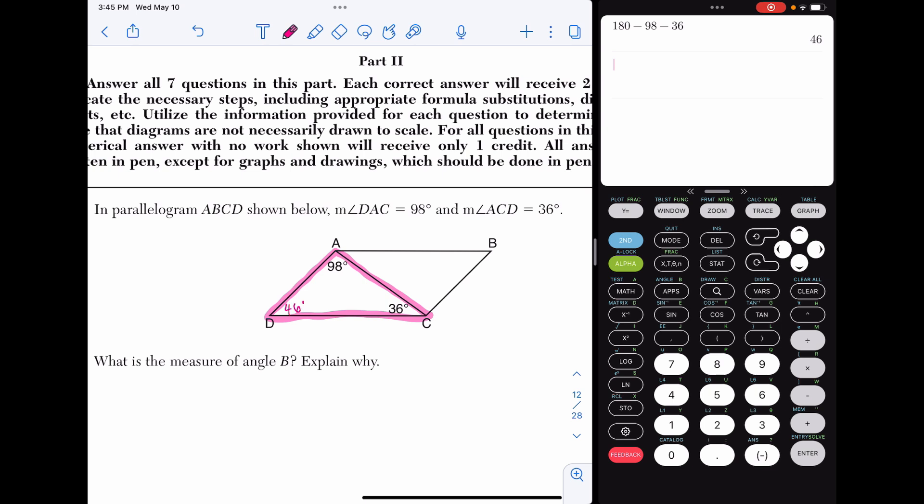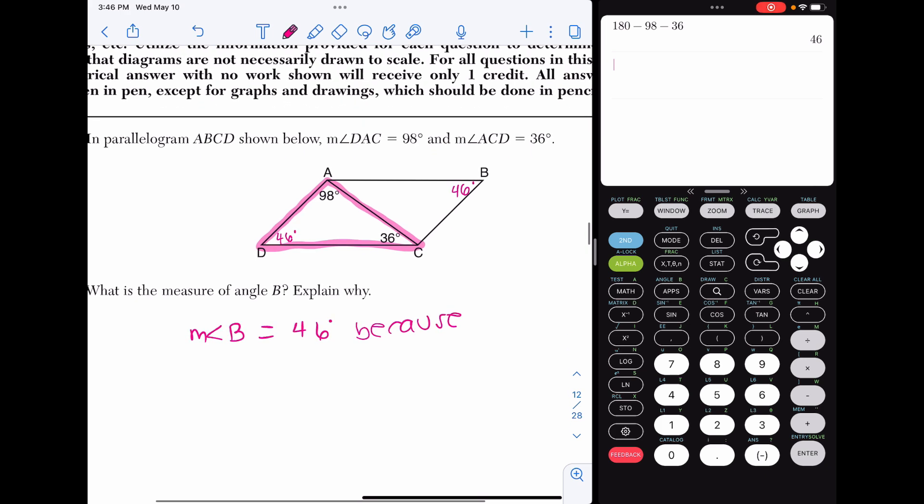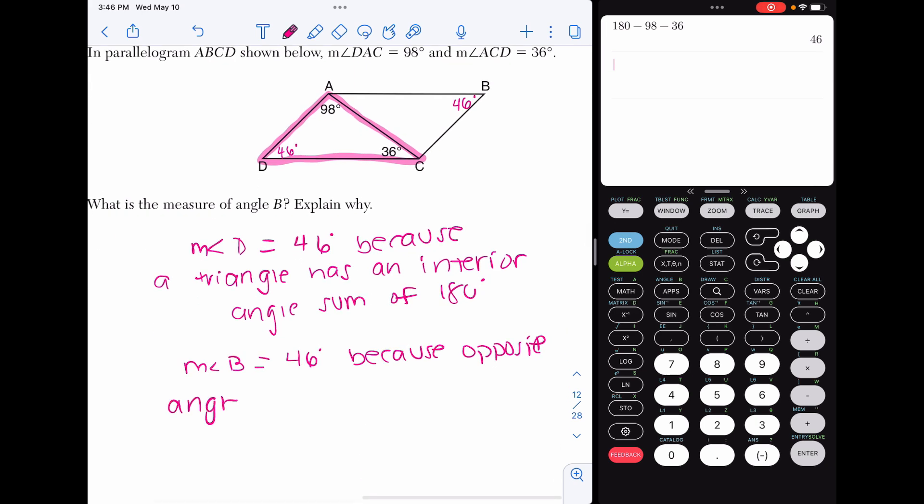And then if we have a parallelogram, opposite angles in a parallelogram are equal to each other. So B is 46. So let's put all that information together. The measure of angle B is equal to 46 degrees. Actually, let's say that angle D is 46 because we found that first. The measure of angle D is 46 degrees because a triangle has an interior angle sum of 180 degrees. And then we can say our answer, the measure of angle B is 46 because opposite angles in a parallelogram are congruent. And that is the answer to our first part two question.